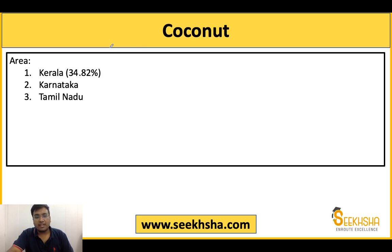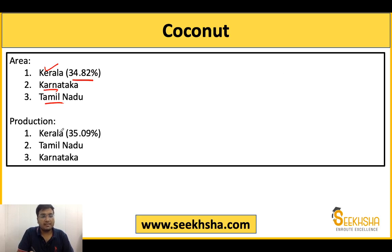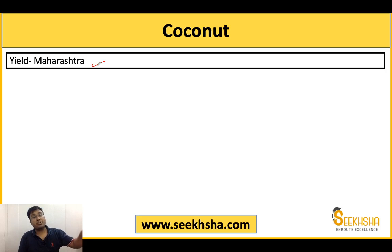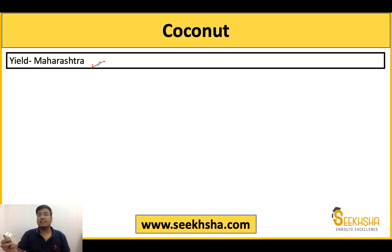For coconut, the area is most important in Kerala at around 34.82%, followed by Karnataka and Tamil Nadu. Production is most important in Kerala at around 35.09%, followed by Tamil Nadu and Karnataka. The yield is also most important in Kerala. So you can see the area, production, and yield are all maximum in Kerala — there is no scope for guesswork.